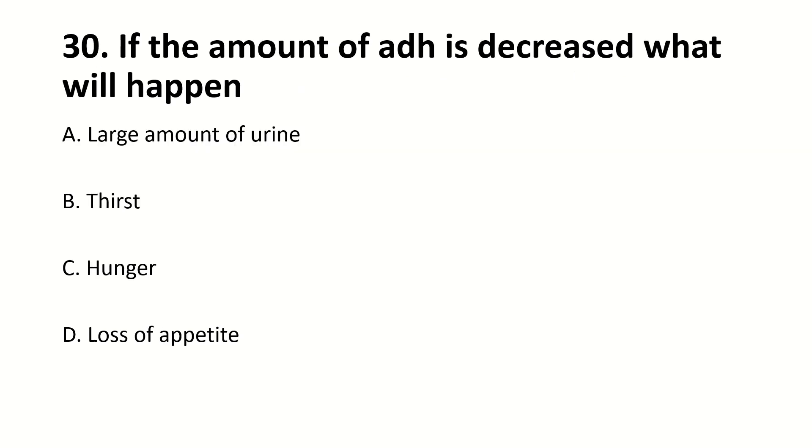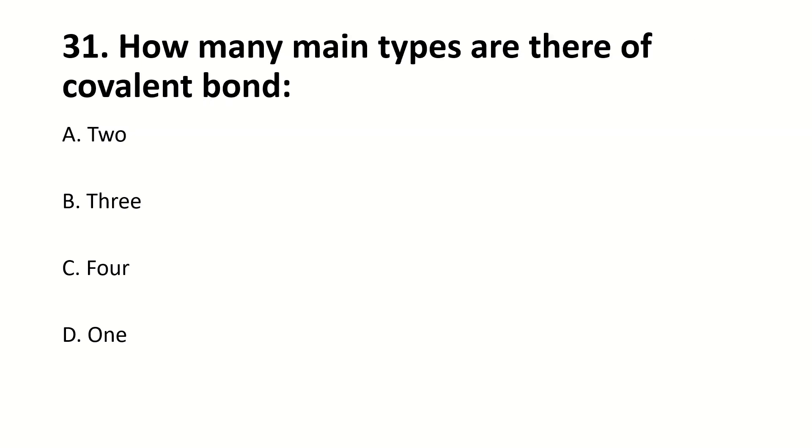If the amount of ADH is decreased, large amount of urine will occur. How many main types are there of covalent bond? Two, polar or non-polar.